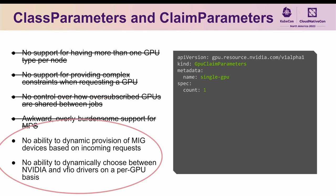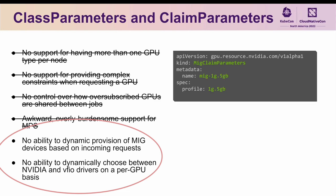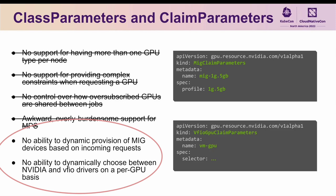The last two limitations are overcome by introducing different claim parameters objects. The MIG Claim Parameters object has a single field representing the MIG profile you would like allocated to the claim, and the VFIO GPU Claim Parameters object has a single selector field, the same as the selector field available to standard GPU Claim Parameters objects. Whenever a claim is allocated that references a MIG Claim Parameters object, a GPU capable of dynamically creating a MIG device of that size is found, the MIG device is created, and then bound to the claim.